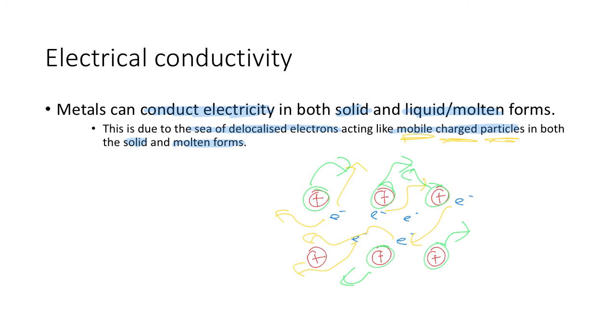So in solid form, it's the sea of delocalized electrons, and in molten form, it's the sea of delocalized electrons and the ions, positive metal ions, which are also acting like mobile charged particles.